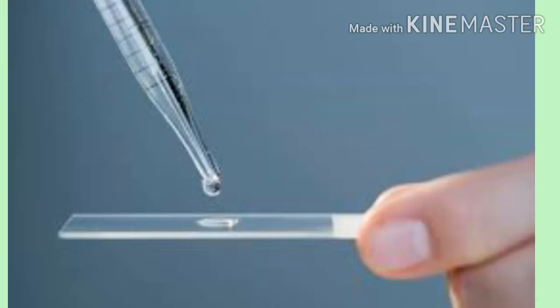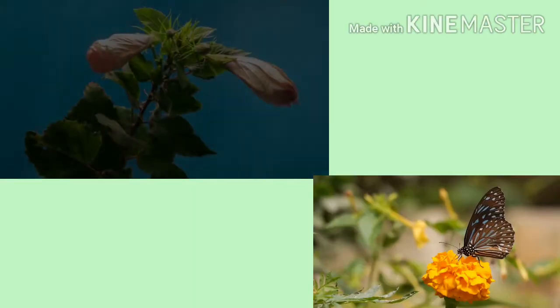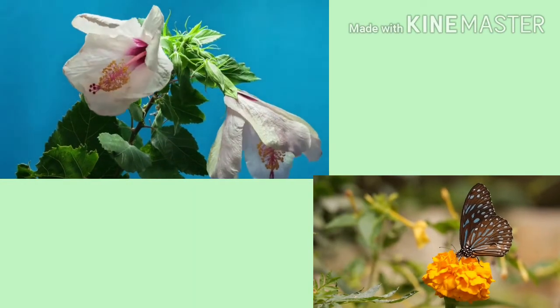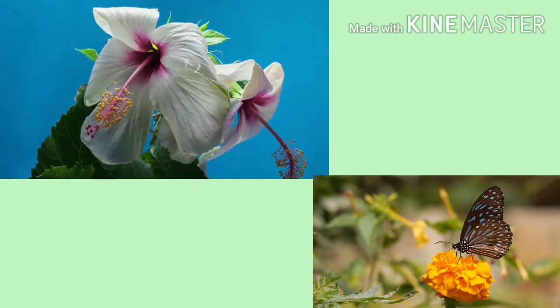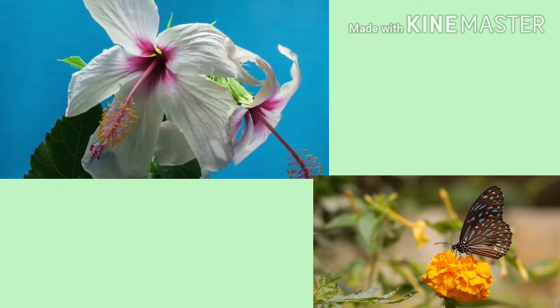Take a slide and put a few drops of water on it. Collect flowers like hibiscus and marigold. Tap the anther over the drop of water.